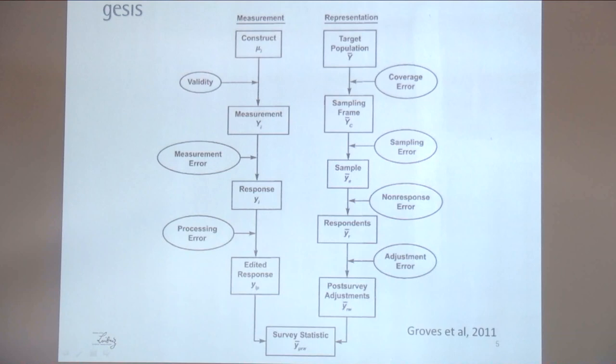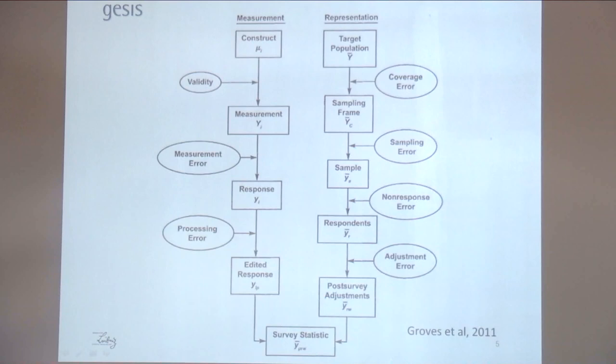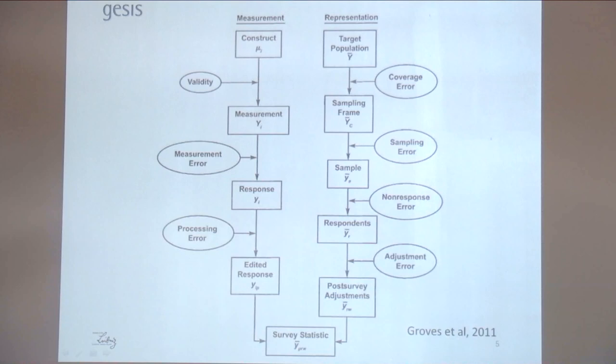This is called the Total Survey Error Framework, developed by Groves et al., and it is the main conceptual framework used today. It distinguishes between errors that can occur at the measurement level and at the representation level. At the measurement level, you first have to define what you're trying to measure — your theoretical construct of interest — which can be something like the political opinion of a person, their attitude towards migrants or women, or their personality. After defining this construct, you deduce a set of questions to capture all relevant aspects, doing cognitive pre-testing to ensure the questions capture the different dimensions.